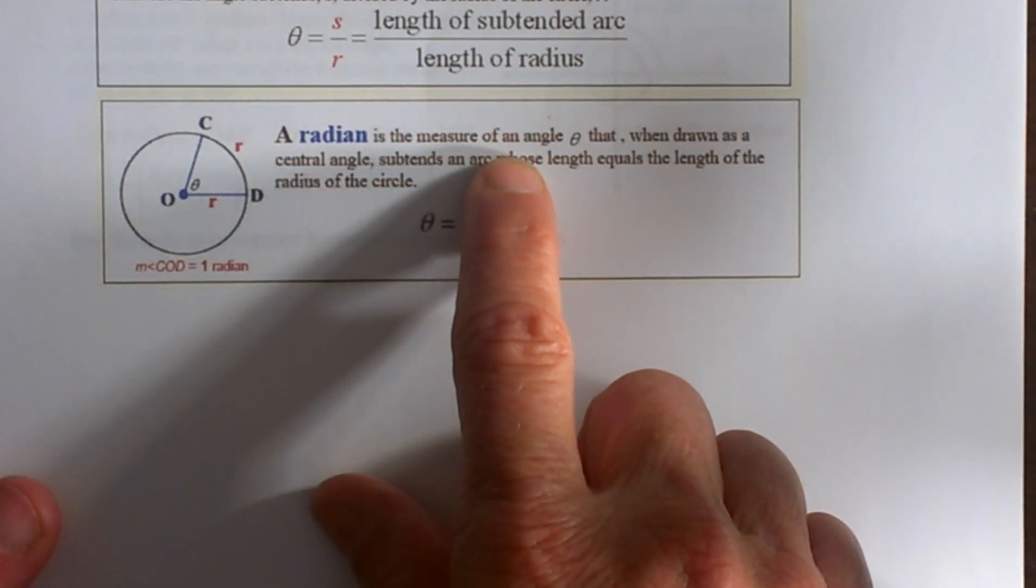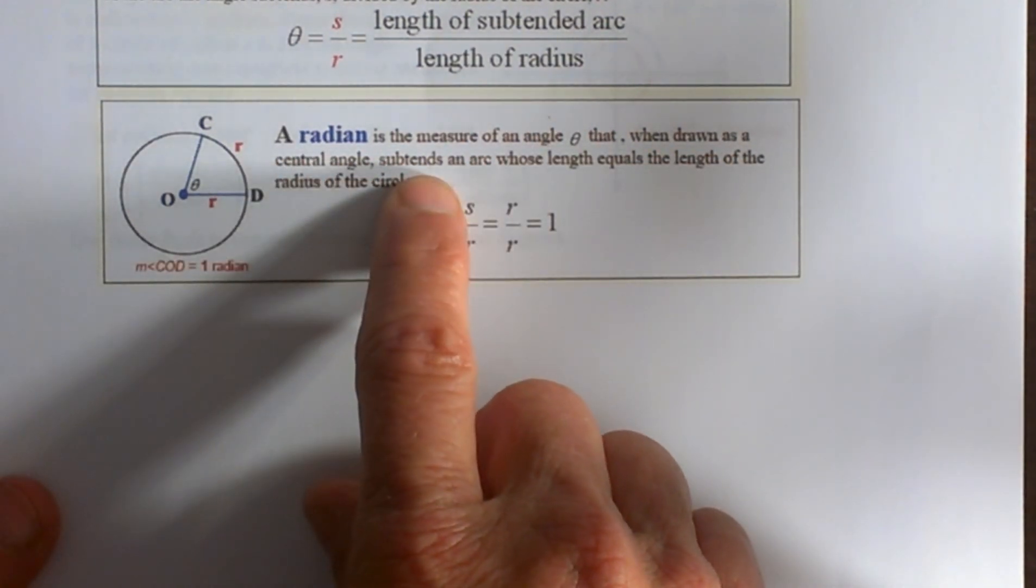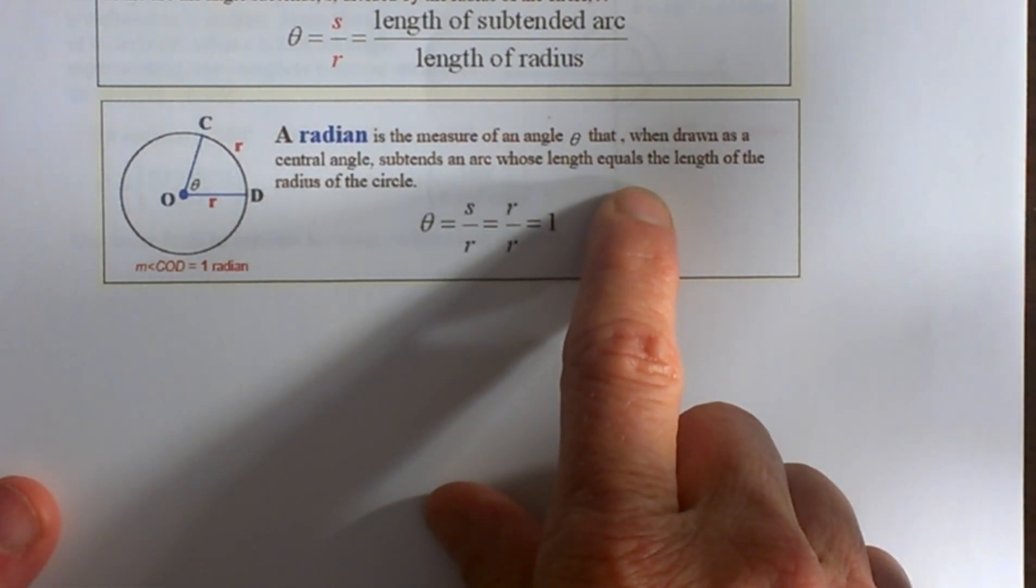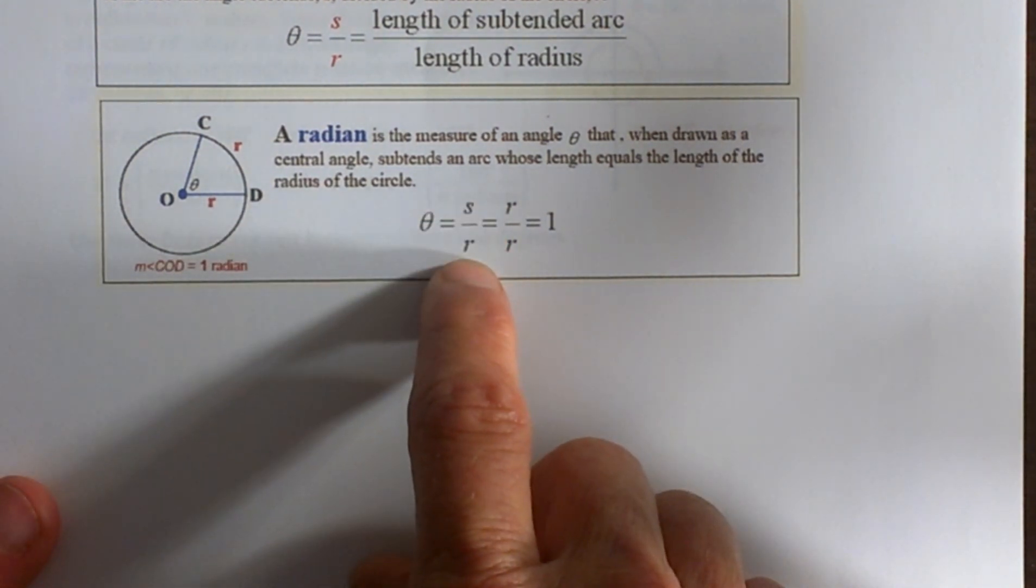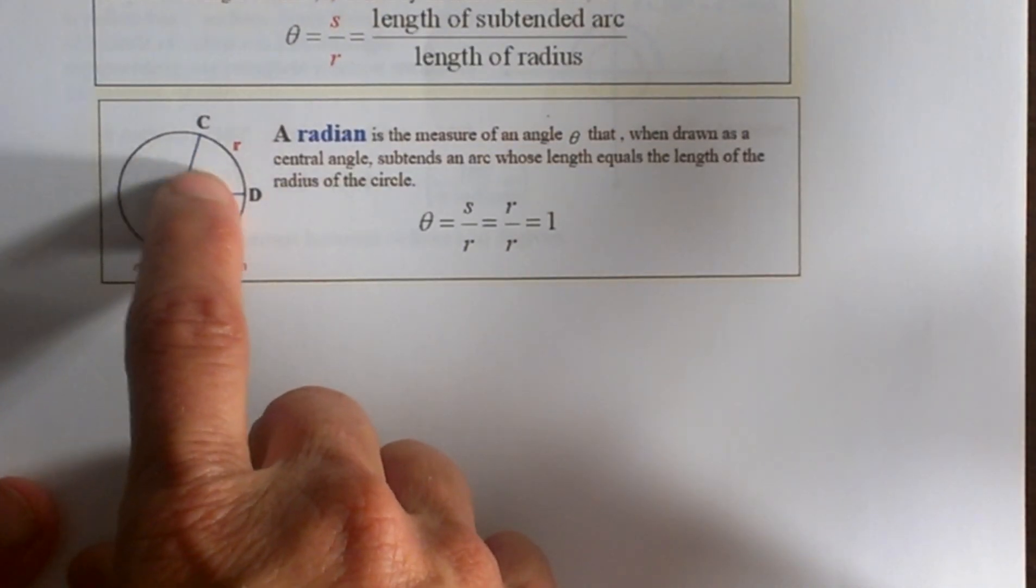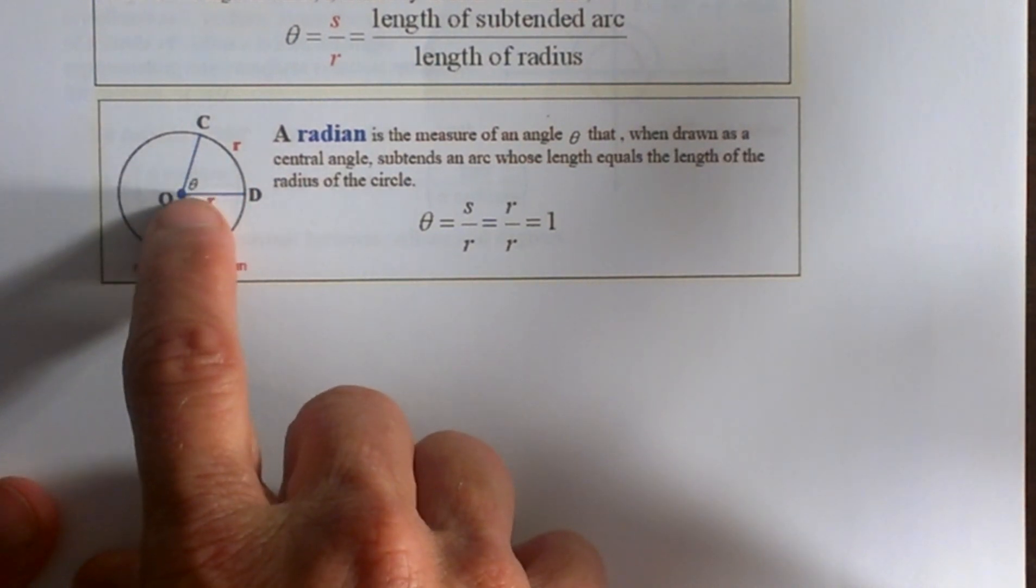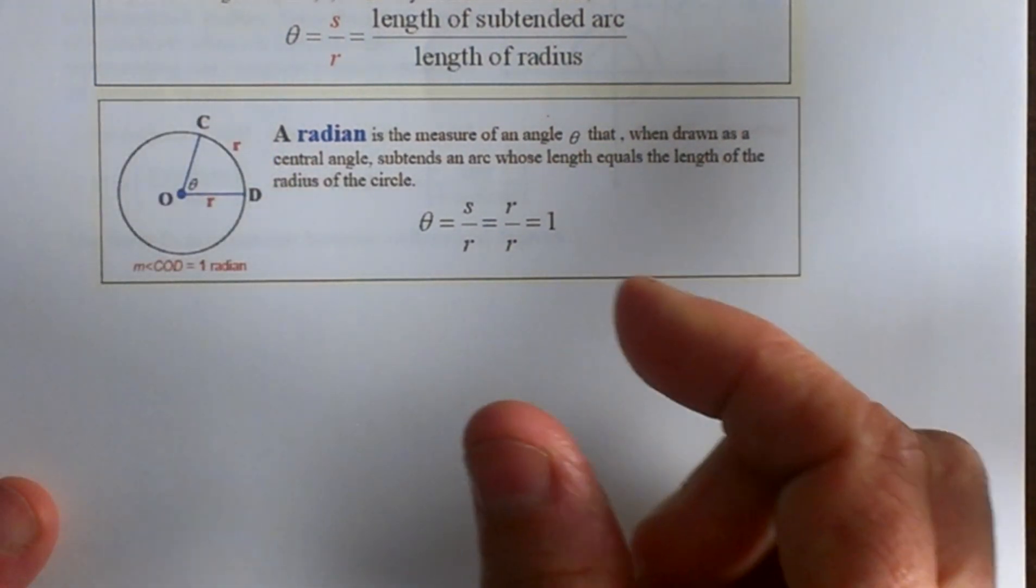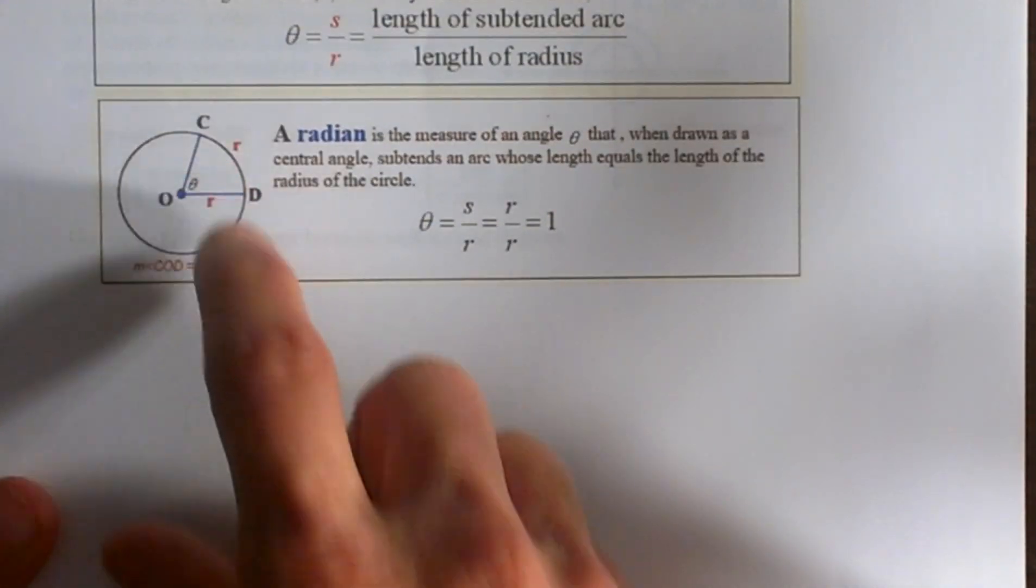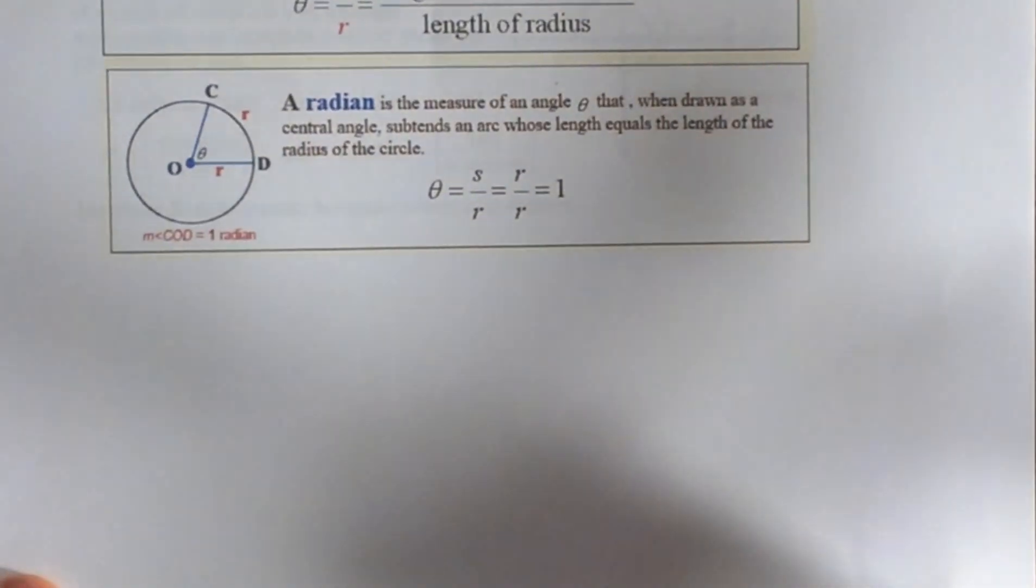A radian is the measure of an angle theta that, when drawn as a central angle, subtends an arc whose length equals the length of the radius of the circle. So one radian means my radius and my arc length are equal to each other. It's close to, but not exactly, 60 degrees.